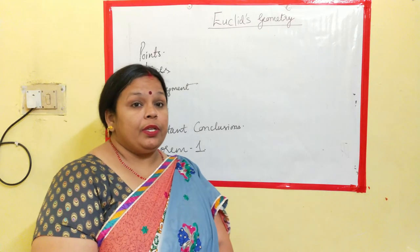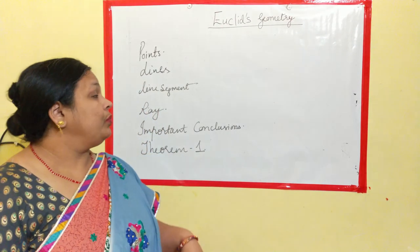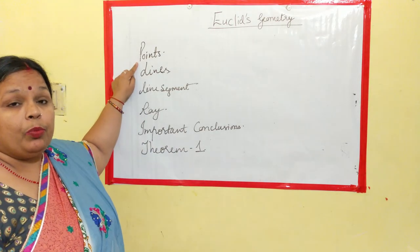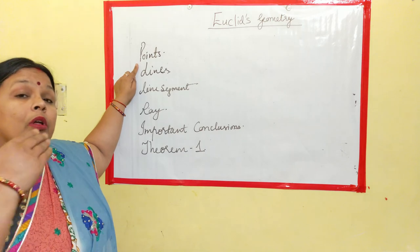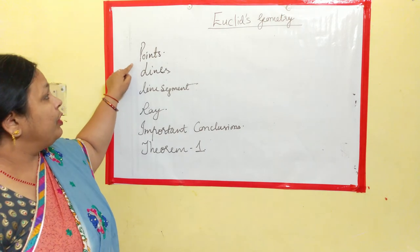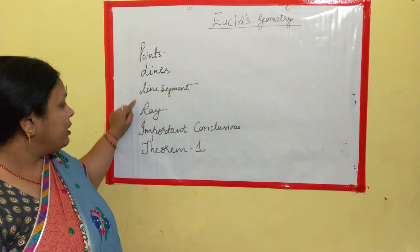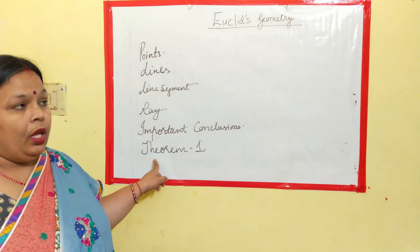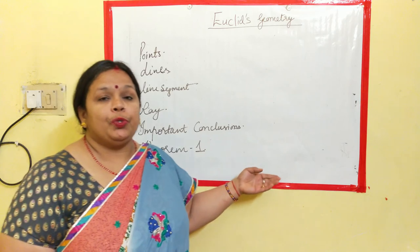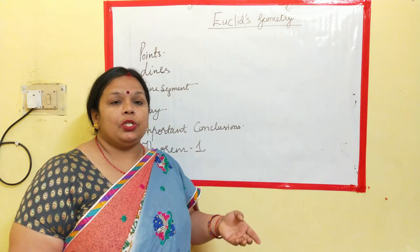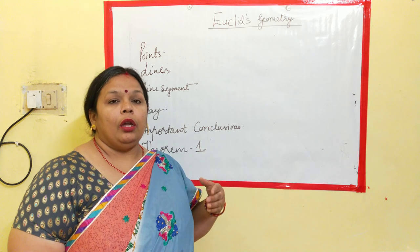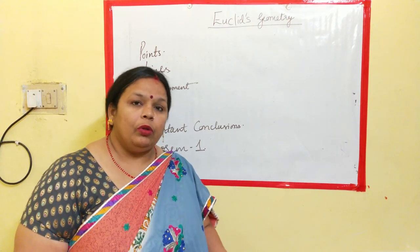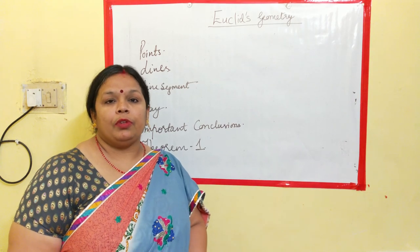To summarize what we have done so far: we took a recap of the previous session covering points, line, line segment, ray, and important conclusions. Then we proved Theorem 1. We will meet in the next session with the continuation of theorems and some problems based on the axioms and postulates. Thanks for now — keep revising the concepts discussed in this video.